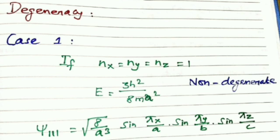For (nₓ, nᵧ, n_z) = (1, 1, 1), the energy is 1² + 1² + 1² = 3, so E = 3h²/8ma². There is only one such state, and this energy is called the zero-point energy of the three-dimensional box. The zero-point energy for the three-dimensional box is 3h²/8ma².